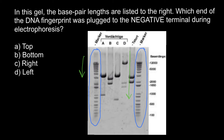Now we can easily tell where the positive and negative charges were applied. Because DNA is slightly electrically negative, in order to move in this direction, we should have a positive end here and a negative end there. So the negative charge was applied here and the positive charge was applied from this side.